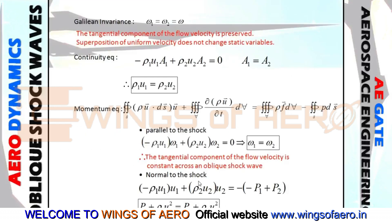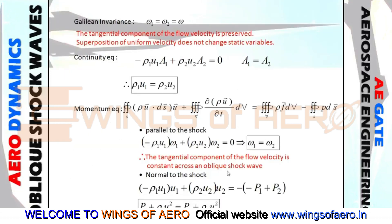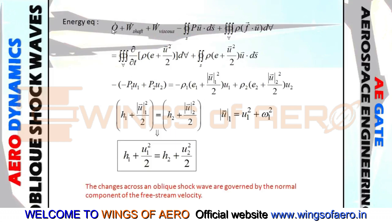From the basic equations — continuity, momentum, and energy — we come to a conclusion that the tangential component of the flow velocity is preserved, or rather the tangential flow velocity is constant across an oblique shock wave. That means w1 and w2 are the same, as expressed here. From the energy equation, the flow is governed by the normal component of the upstream velocity, meaning the change in static properties across the shock wave varies across the shock wave.